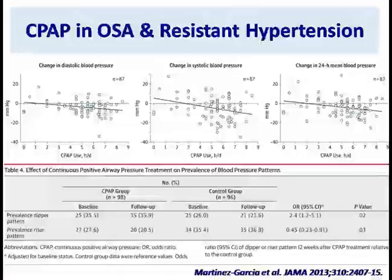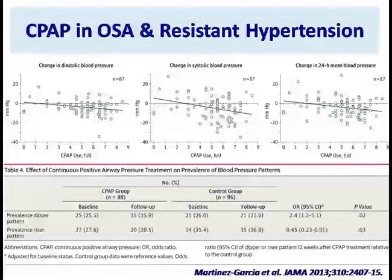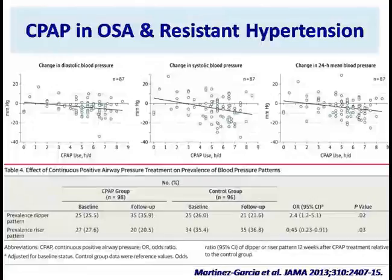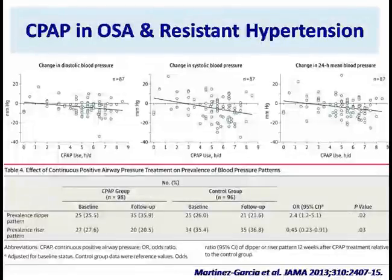CPAP has clearly shown benefit. In a randomized trial of patients with resistant hypertension using CPAP versus control — 98 patients versus 96 patients — it clearly showed that you can induce a significant decline in both systolic and diastolic blood pressure, as well as in 24-hour ambulatory blood pressure, if you use this technique well.